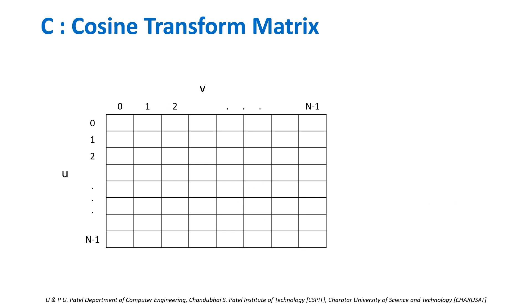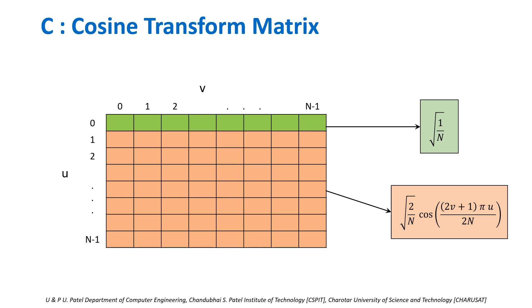Let us visualize the same. C is square matrix of size N×N. u represents rows from 0 to N-1. v represents columns from 0 to N-1. For first row, u=0 and v ranges from 0 to N-1, we will follow first equation. For rest of the rows, we will follow the second equation.